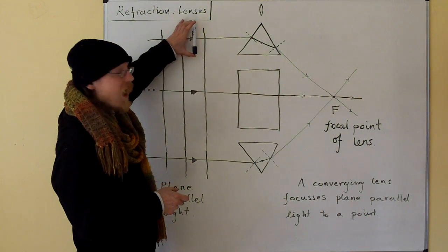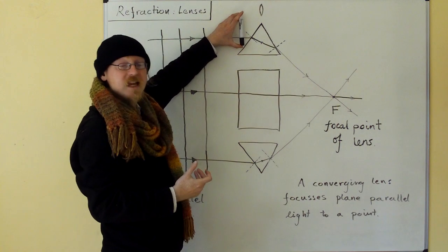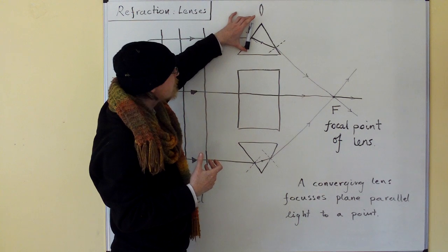When our wave front hits our prism, this side gets into the prism first, so it slows down, while the other side is still going faster.